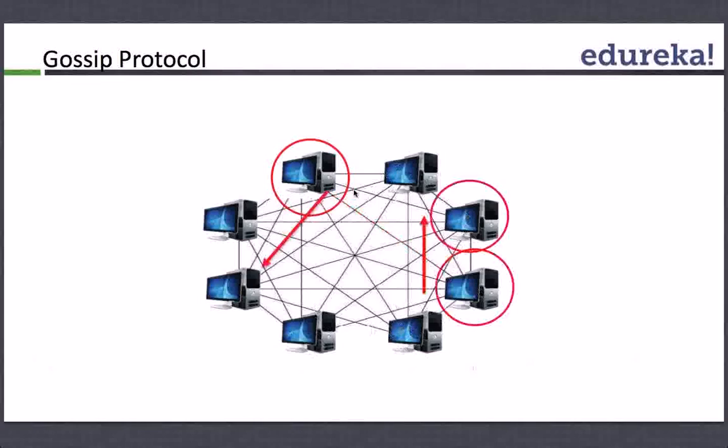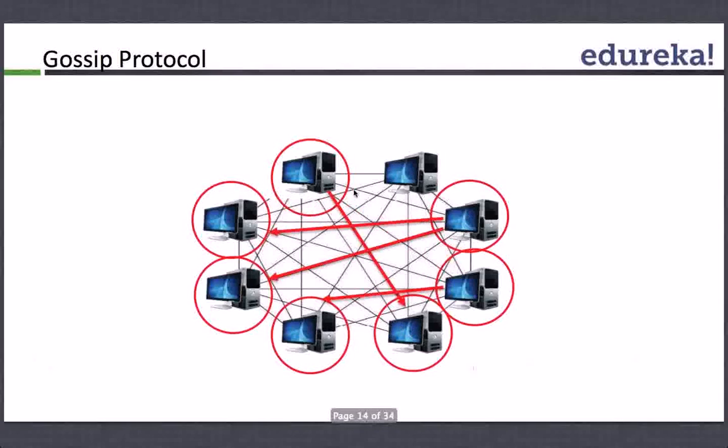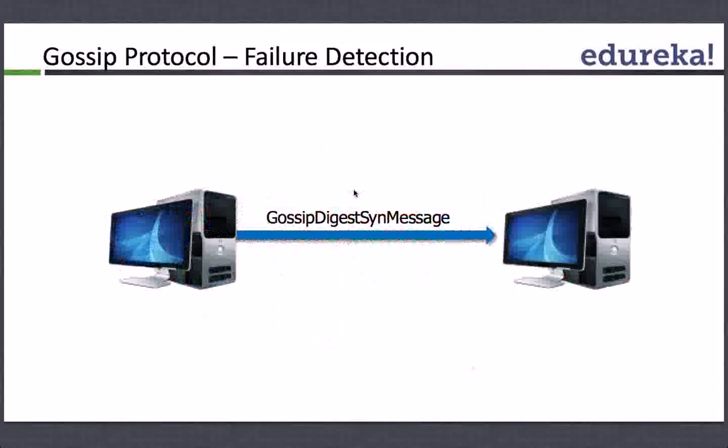Let's jump to the failure detection in the gossip protocol. How does the failure detection happen? Basically, there's a message name called Gossip Digest Sync. It's a very similar protocol to TCP for people who know the TCP protocol in depth. But even if you don't know, it basically sends a message called a Sync message. A Gossip Digest Sync message is sent from one node to other node. Once the other node receives this kind of message, it sends a message back to that requesting node called ACK, short form of acknowledgement. It gives an acknowledgement message back saying that, hey, I am alive.